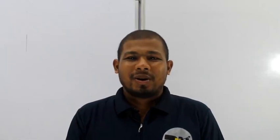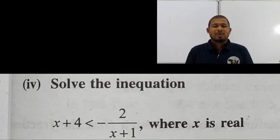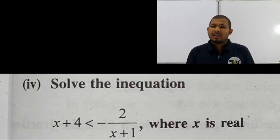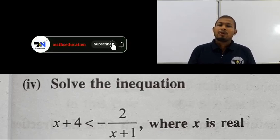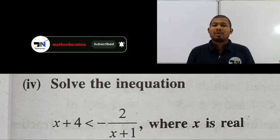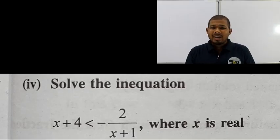Hello everyone, I am very excited and welcome to the Mathematics Olympics 2020. Today I will ask you to solve the equation. The condition is x plus 4 is less than minus 2 upon x plus 1, where x is a real number. So we have x plus 4 which is less than minus 2 upon x plus 1. This is the condition that we apply.